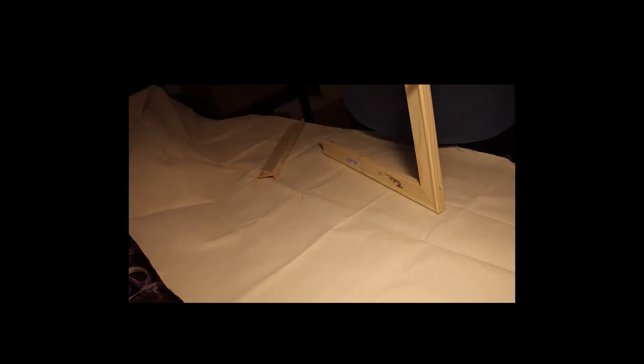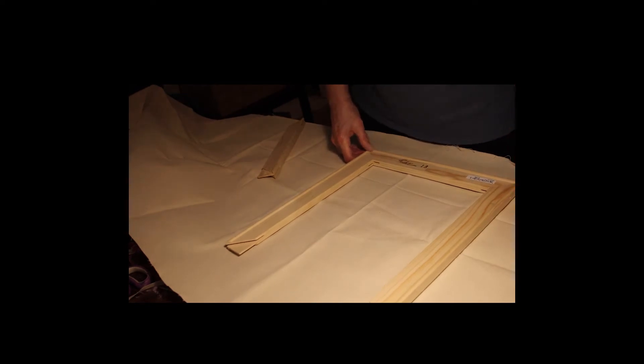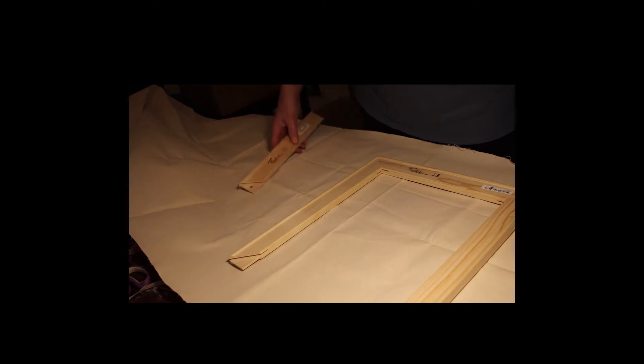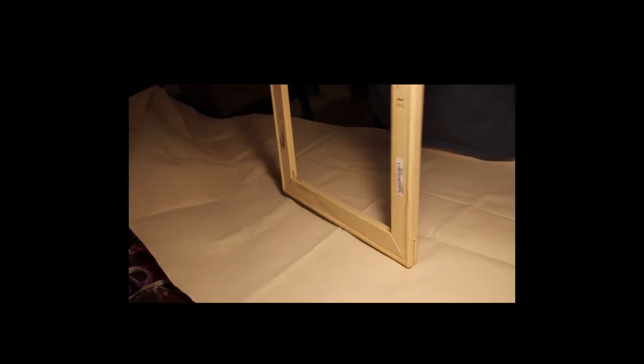But you can create odd sizes this way. Just be aware when you create odd sizes, the frames are not going to fit. You can get custom made frames or build them yourself, or you can also just hang it with the stretcher bars, gallery wrap style. You can see how they fit together, just like so. You want to get it nice and square.